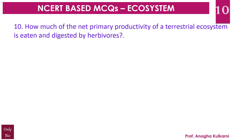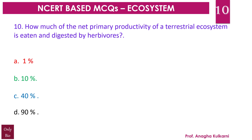Question number 10. How much of the net primary productivity of a terrestrial ecosystem is eaten and digested by herbivores? A. 1%, B. 10%, C. 40%, D. 90%. The correct answer is B — 10%. Approximately 10% of the net primary productivity of a terrestrial ecosystem is eaten and digested by herbivores.